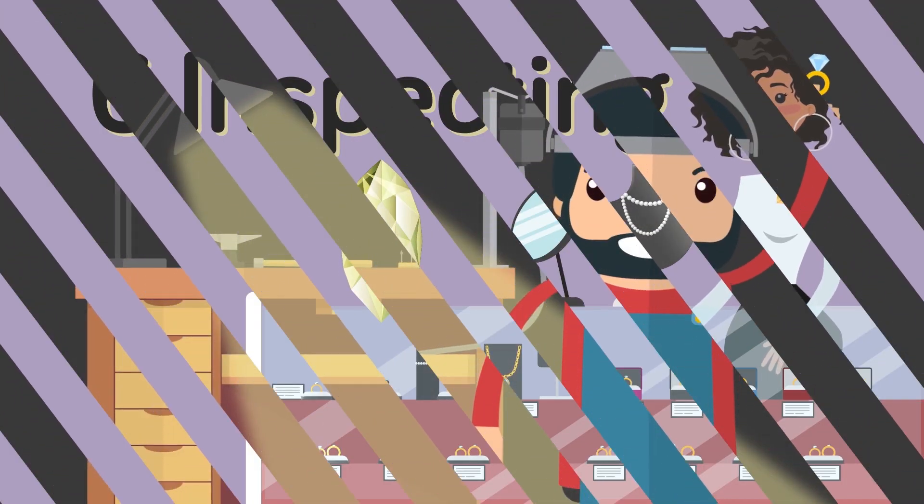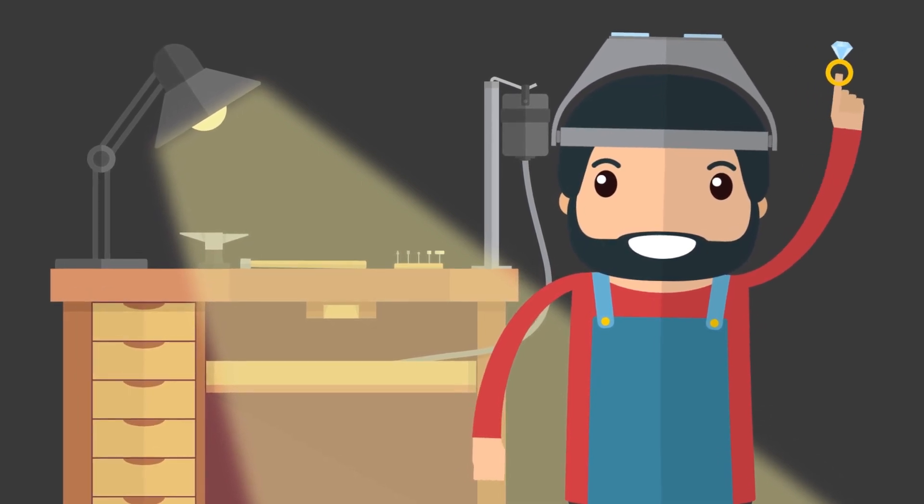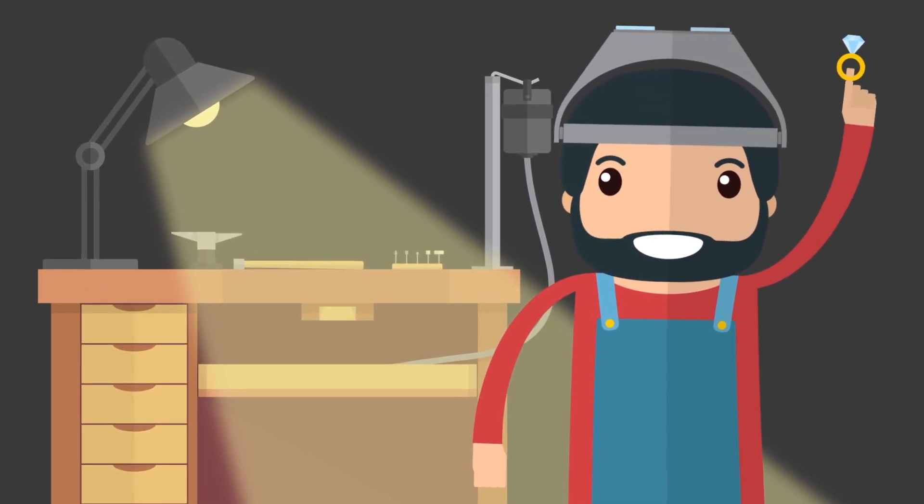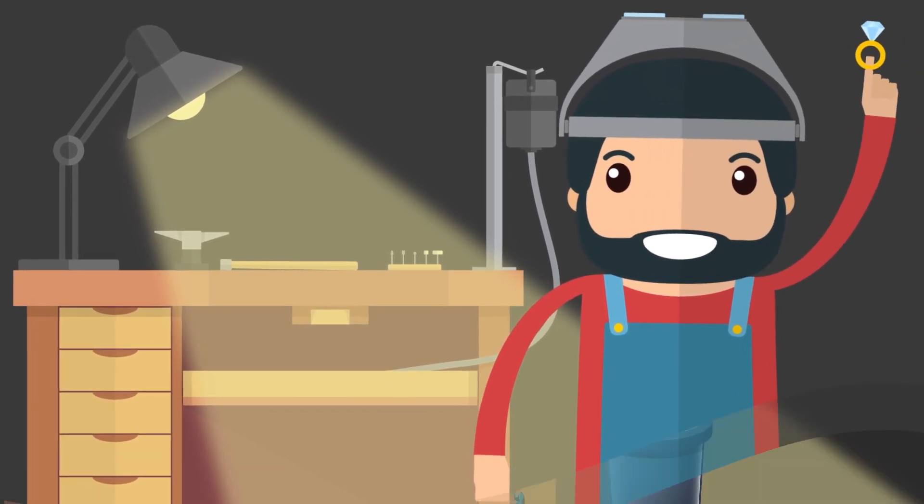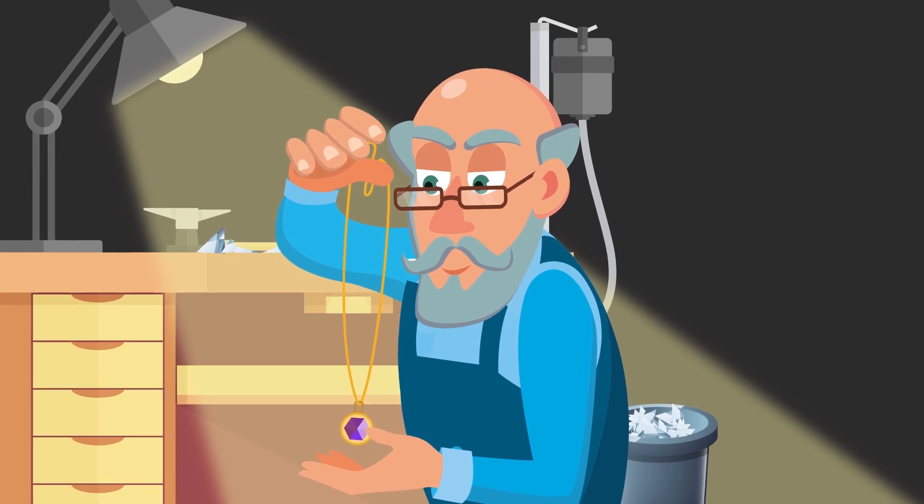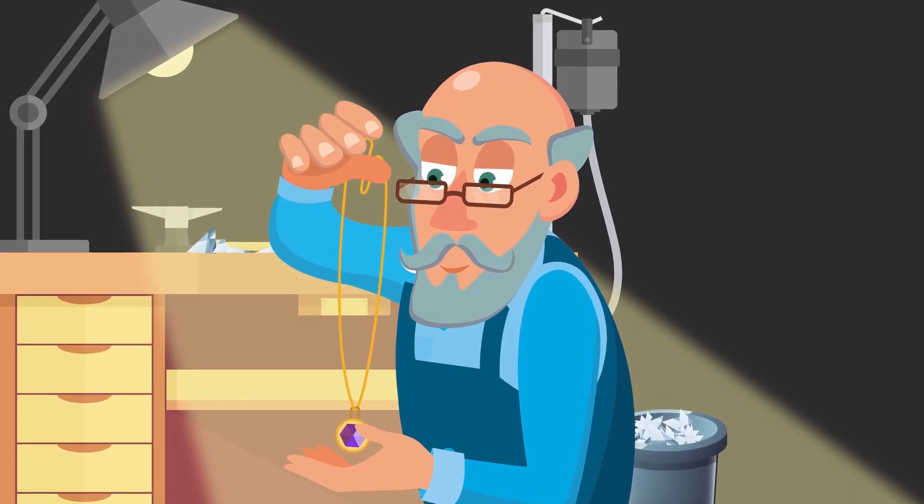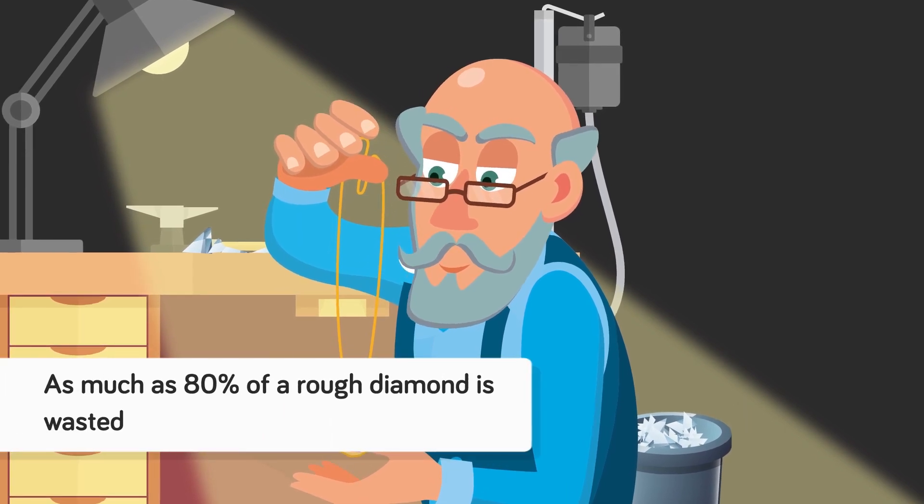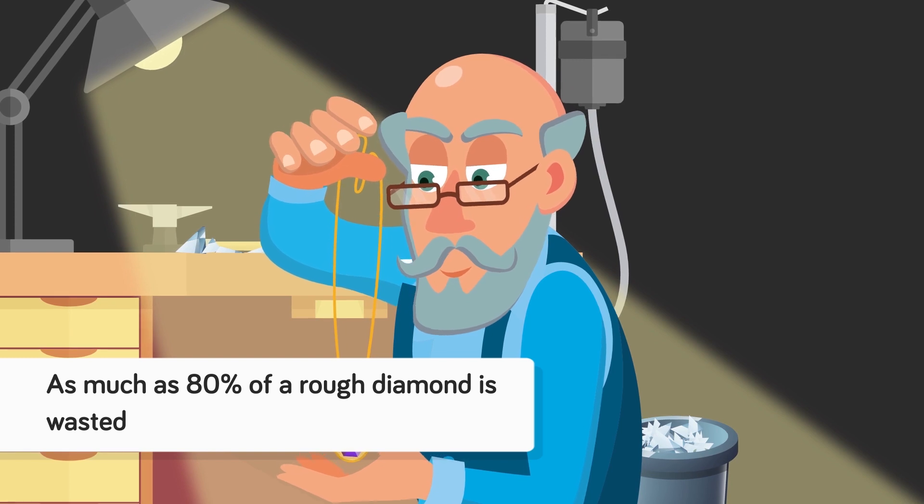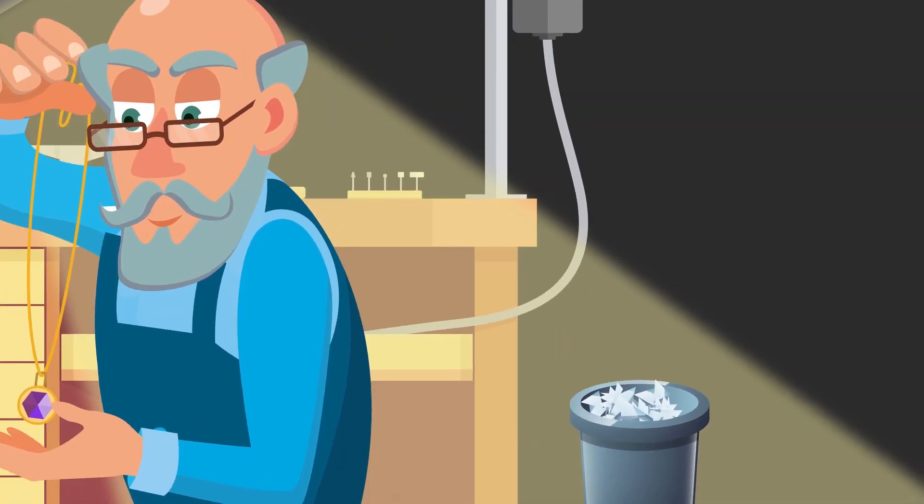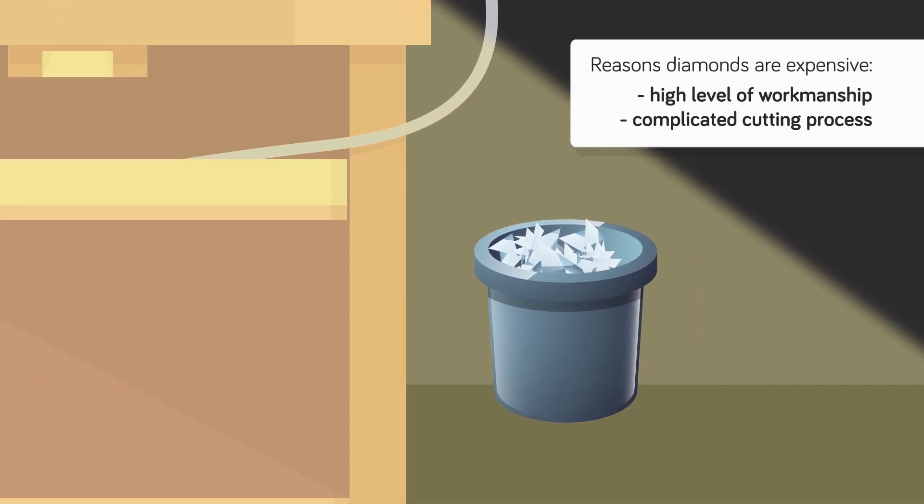6. Inspecting. To determine the value of the diamond, the cutter needs to evaluate his work and decide how much the end product is worth. Weight, size, and purity all come into the valuation equation. Depending on the shape and the size of the rough diamond rock, much is wasted. Large blocks of carbon that don't convert to diamond are broken away. Sometimes, as much as 80% of a rough diamond is wasted in the cutting process. Normally, more than 50% isn't used. The high level of workmanship and the complicated cutting process are two of the reasons why diamonds don't come cheap.